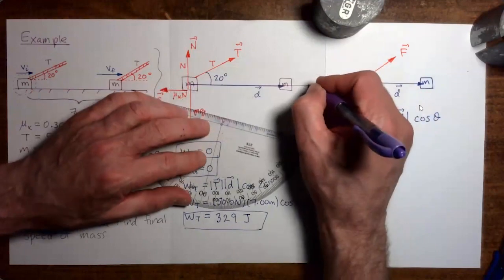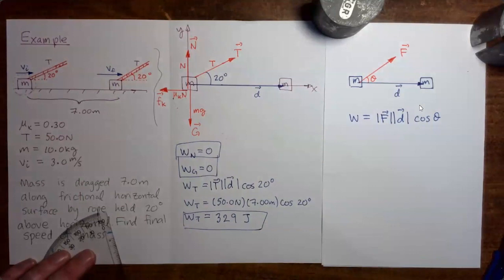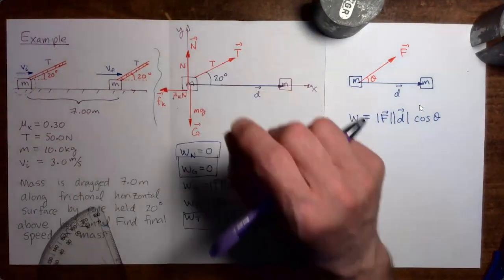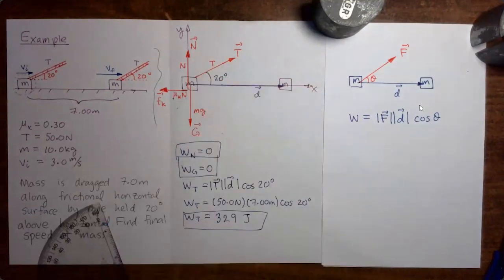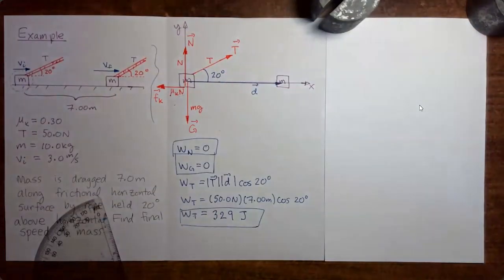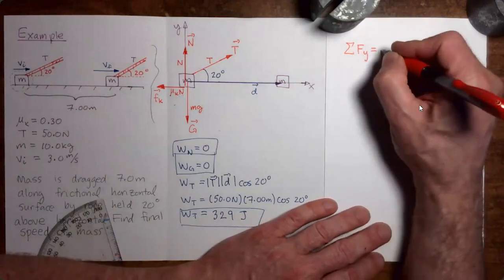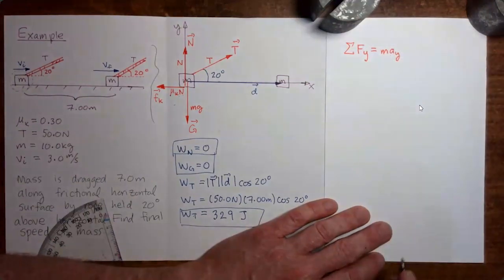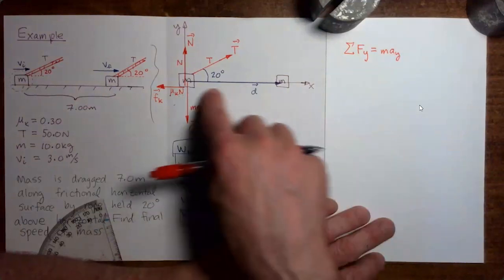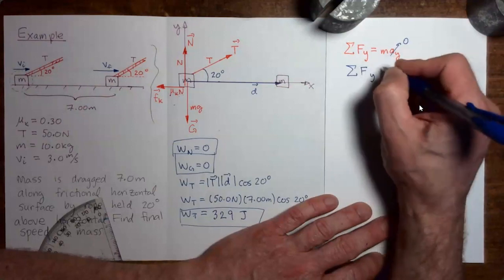In order to do this, I'm going to introduce coordinate axes — an x-axis and y-axis — and we're going to do a force balance along the y direction in order to find the strength of the normal force. I would encourage you to pause the video here and apply Newton's second law along the y direction to try and find the magnitude of the normal force. I'm going to do an abbreviated version: sum of y components of forces equals mass times y component of acceleration. There's no acceleration in the y direction, so the y component of the acceleration is zero.